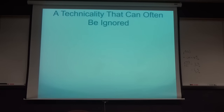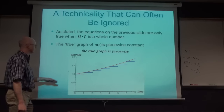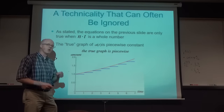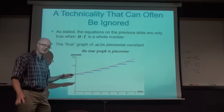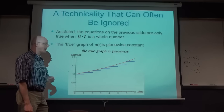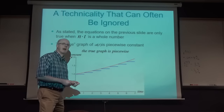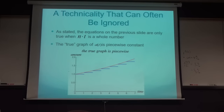Here's a technicality that can often be ignored, though not always: the equations are only true when N times T is a whole number. In reality the graph of A(T) is piecewise constant - the blue horizontal lines make up the true graph. You only get interest at the end of each compounding period (e.g., at end of every month for monthly compounding). If quarterly, jumps occur at time 1/4, 1/2, 3/4, 1 year, etc. This can sometimes matter.